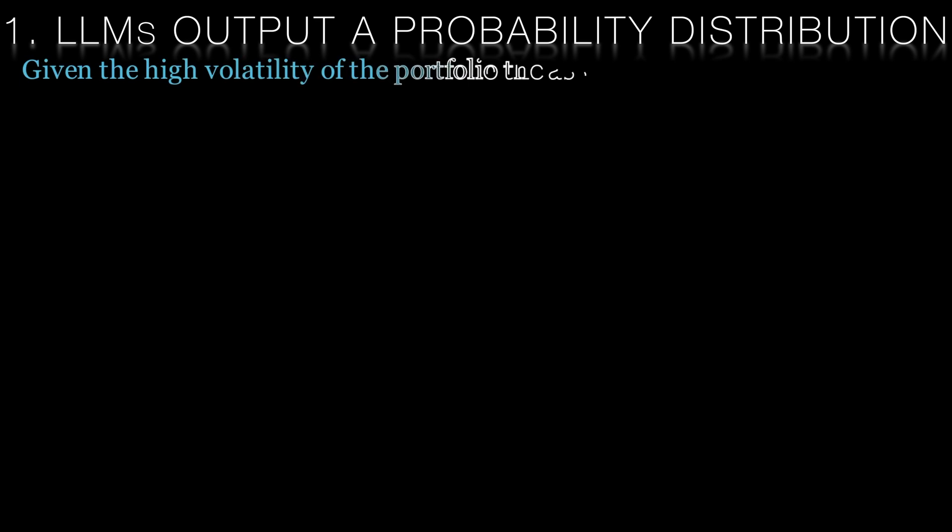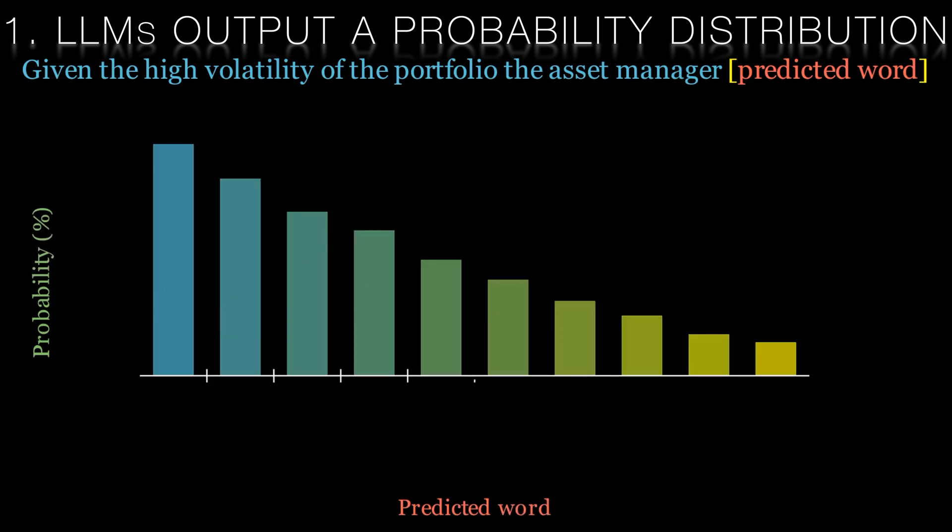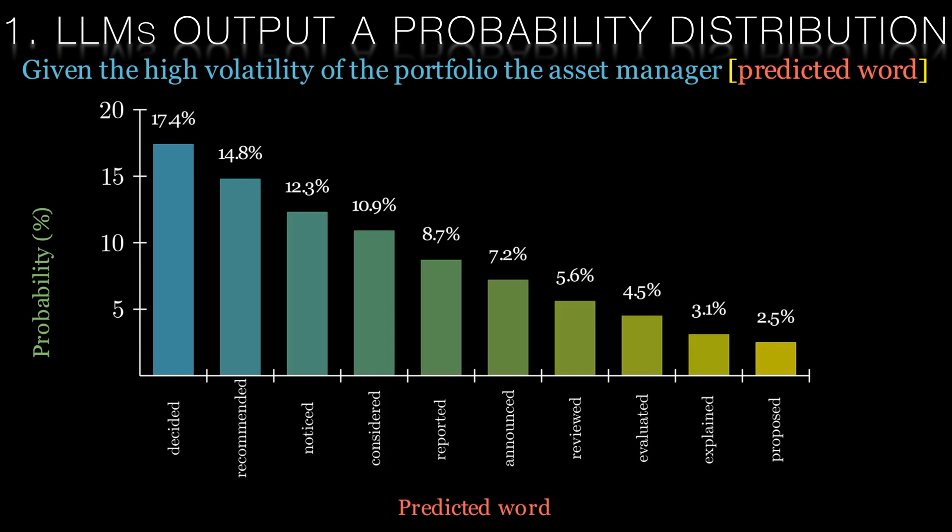Given the high volatility of the portfolio, the asset manager, what word comes next? The AI doesn't just guess randomly, it calculates the probability of each possible word based on its training. Our animation here shows how the model predicts the next word. Decided might have the highest probability, but other words like recommended or noticed are also considered. Each word is assigned a probability reflecting how likely it is to follow in this context.